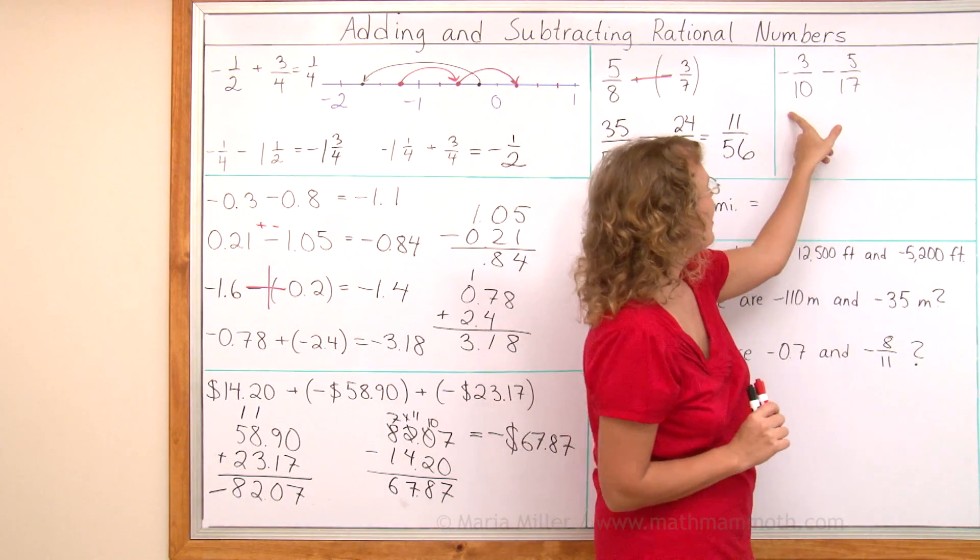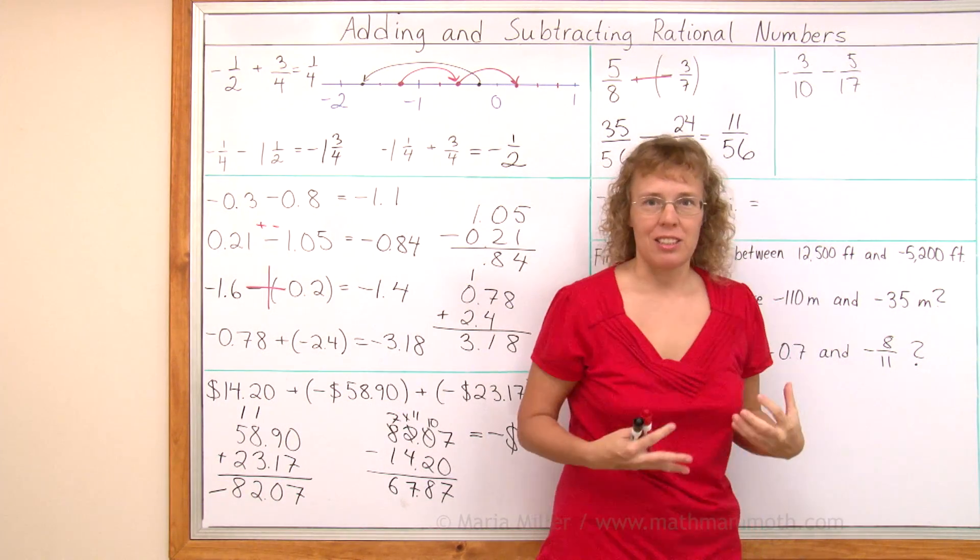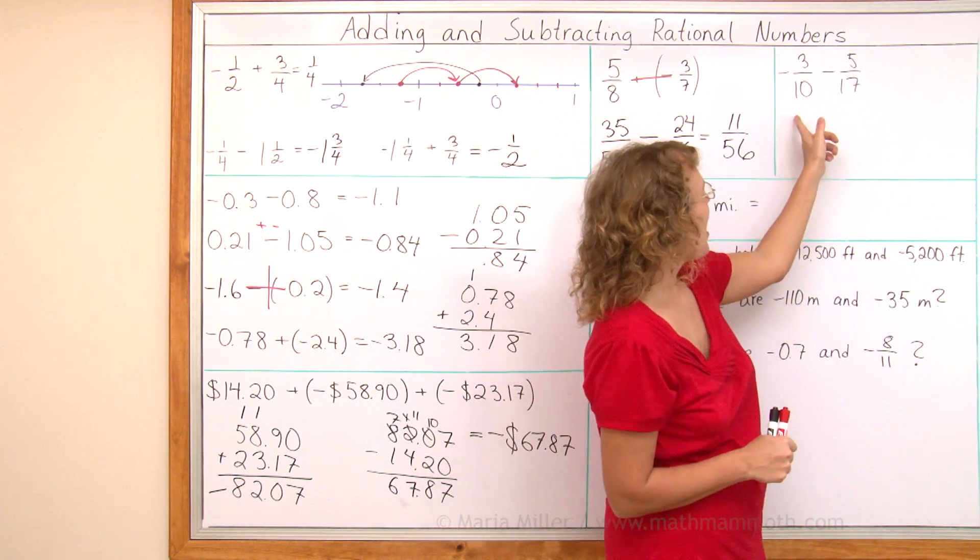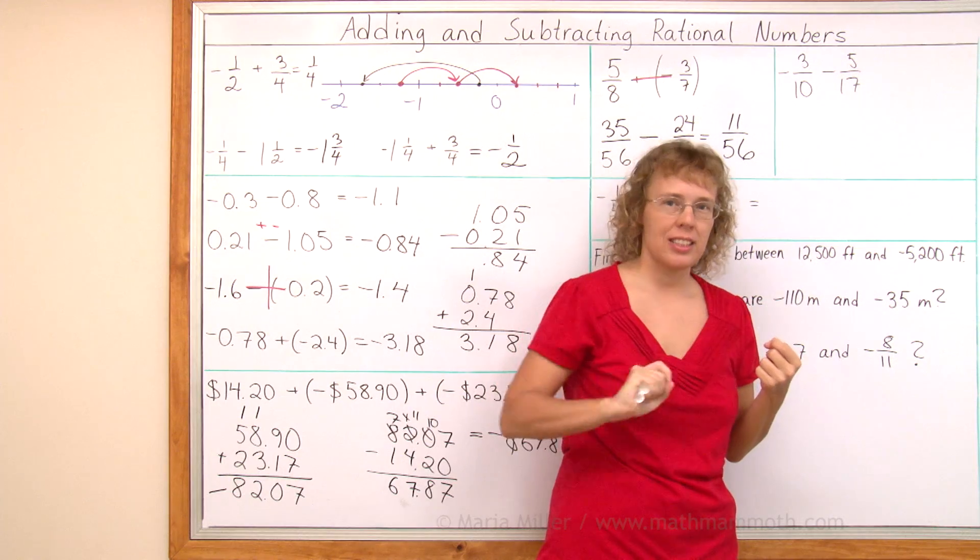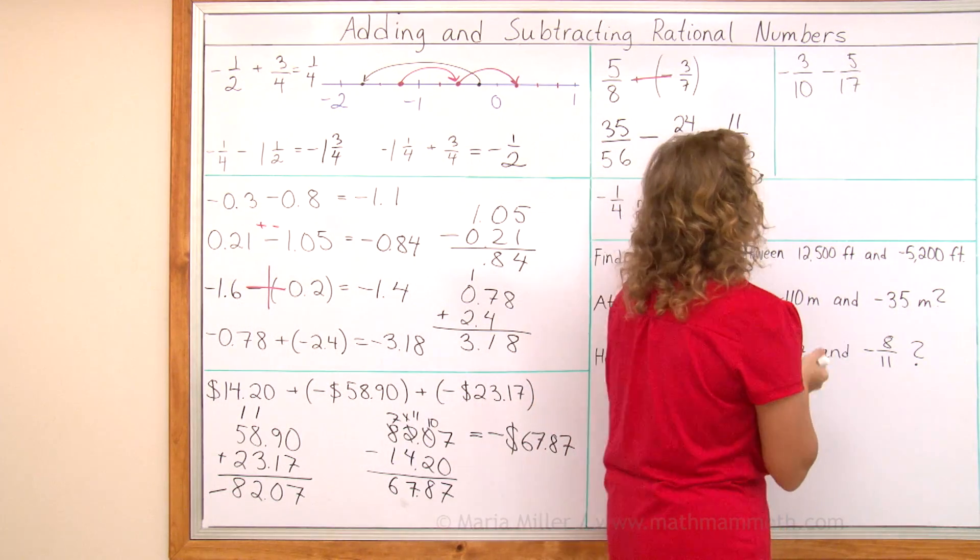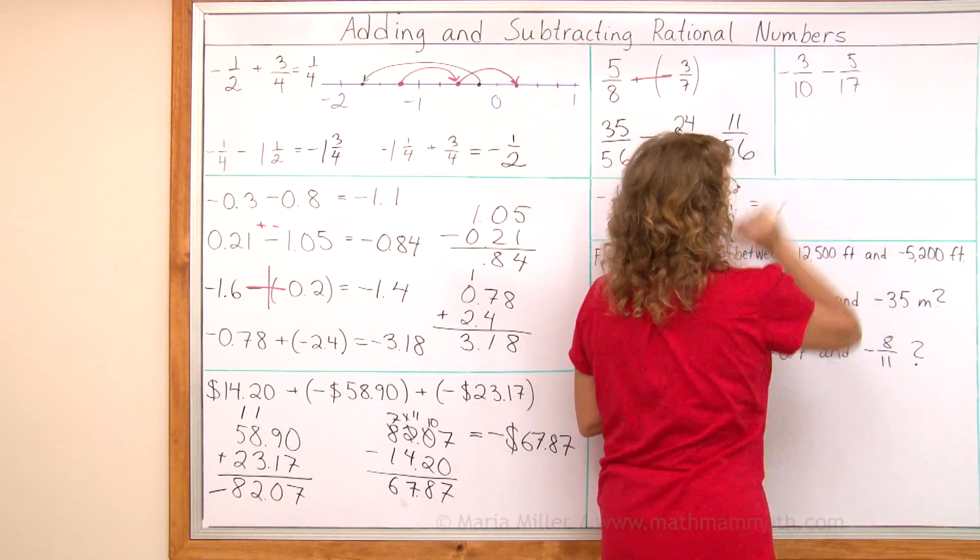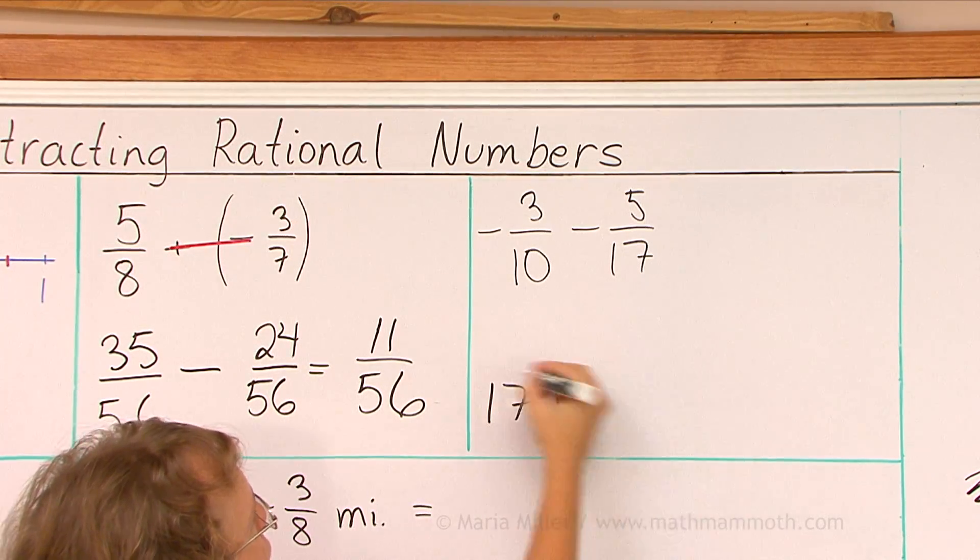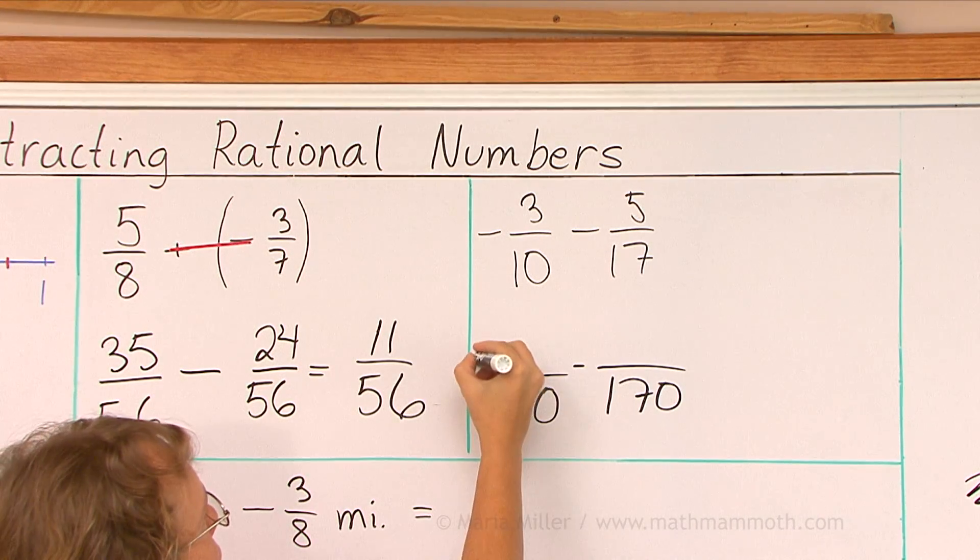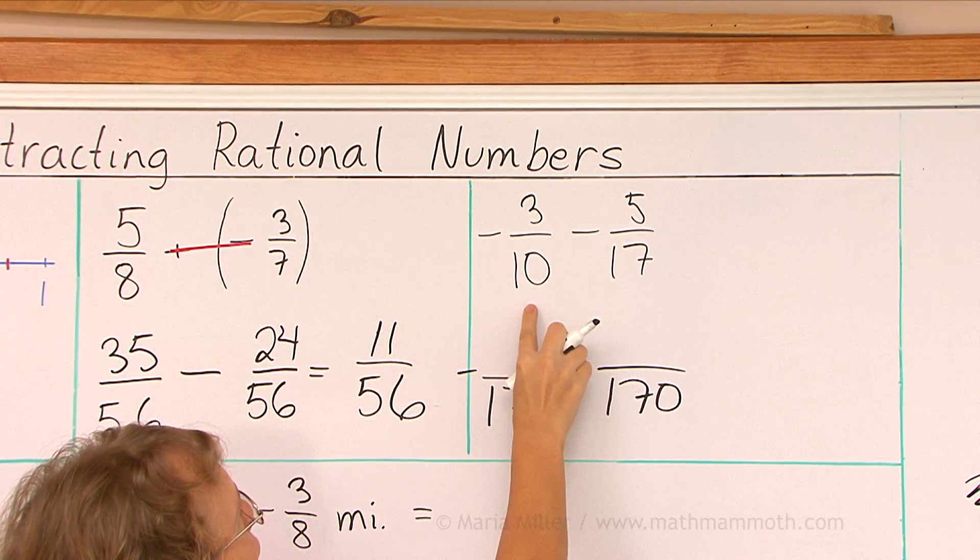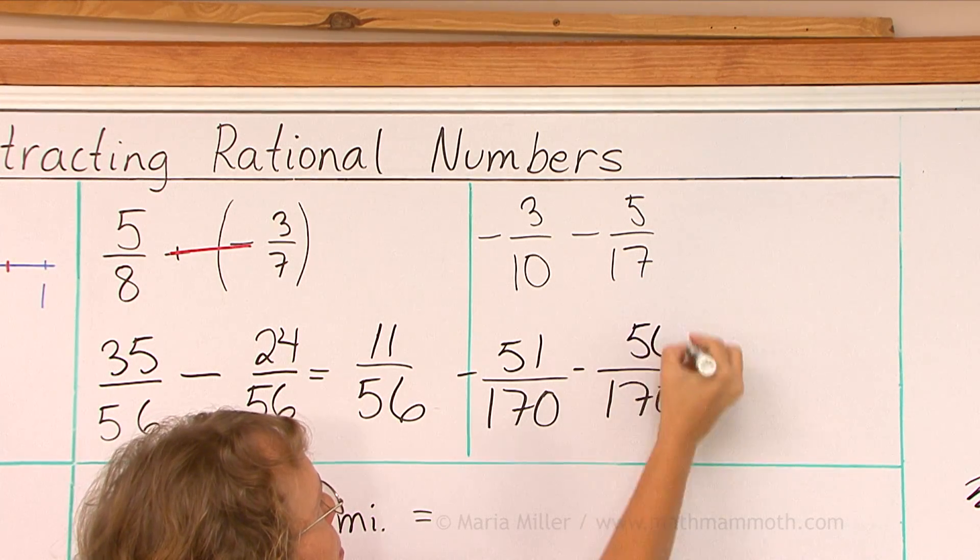The next one is a negative fraction and then a subtraction. So this would mean negative is a more negative situation once again. So you could add these fractions, add their absolute values, and then take the answer as negative. I'm not going to write it that way here though. I'm just going to keep it as it is, negative and minus. Again we need a common denominator, one-seventy this time. And there's going to be minus here. We get seventeen times three, and over here five times ten.